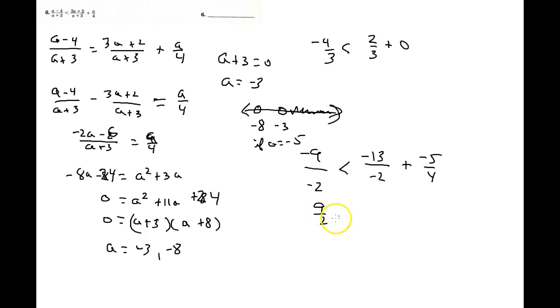Okay, checking this out. This is 9 halves. This is less than 13 halves plus negative 5 fourths. And so I look at this and go, I'm not really sure. So I'm going to make everything in terms of fourths, which would make it obvious. That would be 18 fourths is less than 26 fourths plus negative 5 fourths. And that's also true. So that would be true from negative 3 to negative 8. So that's true as well.